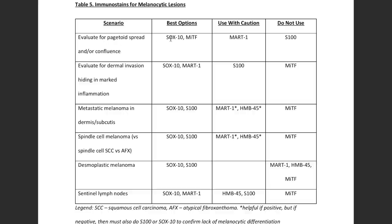My personal opinion: the best stain for assessing pagetoid spread is Sox10. It's a nice crisp nuclear stain. MITF is also a nuclear stain and will work in this setting, although I haven't found it to be quite as crisp, and it has very little utility outside of this one setting of looking for pagetoid spread in the epidermis. Sox10 can also be used for neural things and other lesions, so it has more versatility. Mart1 can be used in this setting but with caution, because it can really overstain and make it look like there's a lot more melanocyte activity at the junction than there actually is.